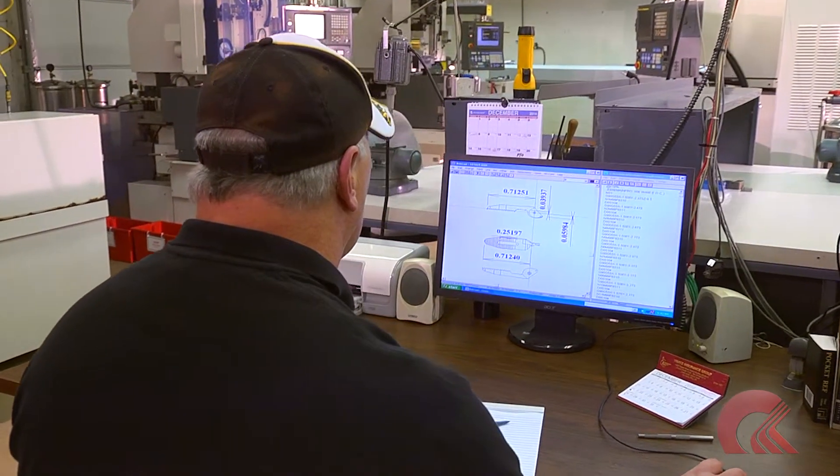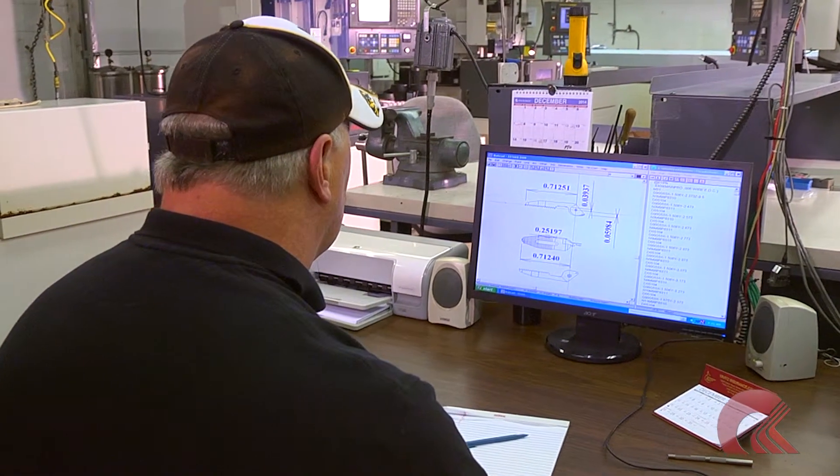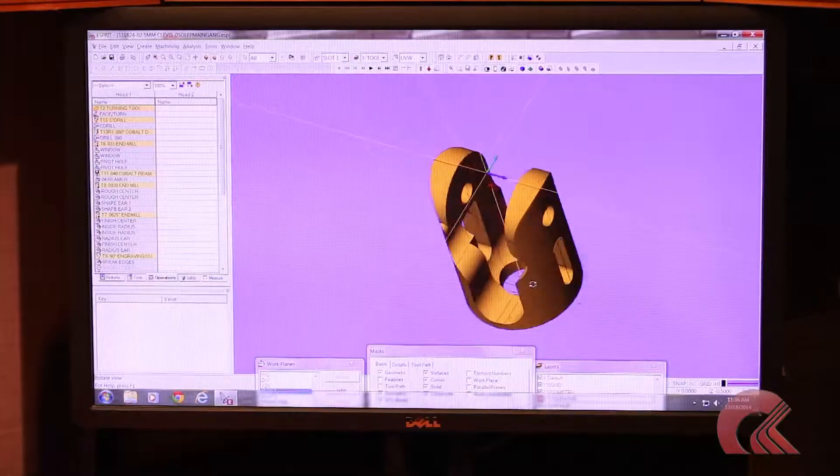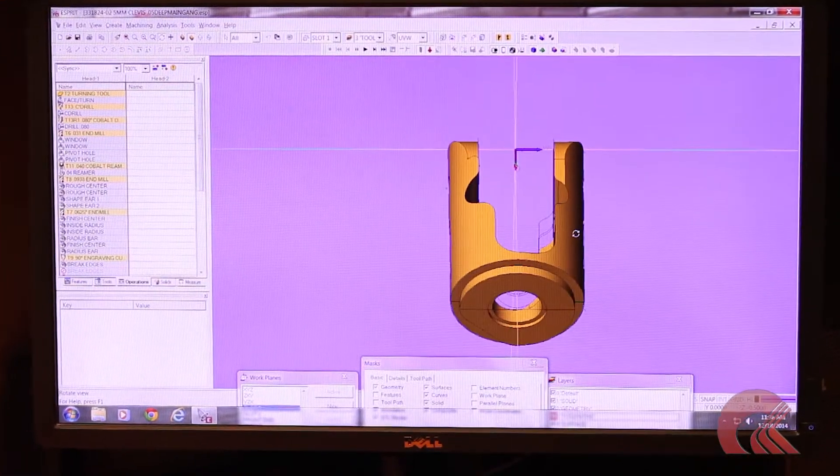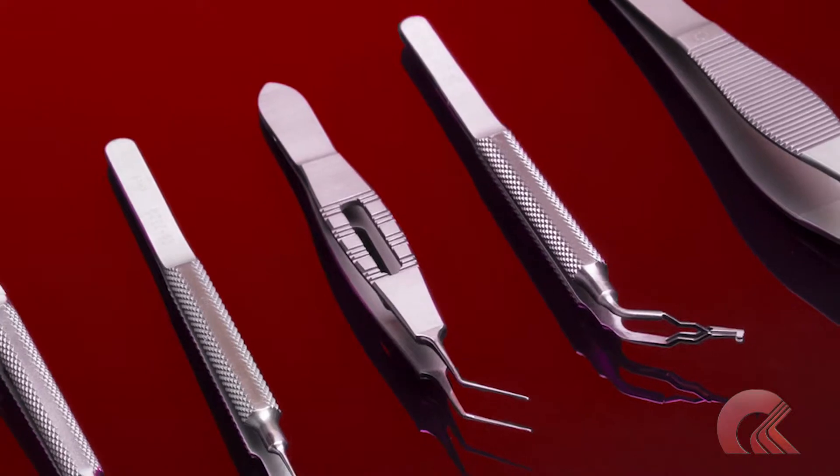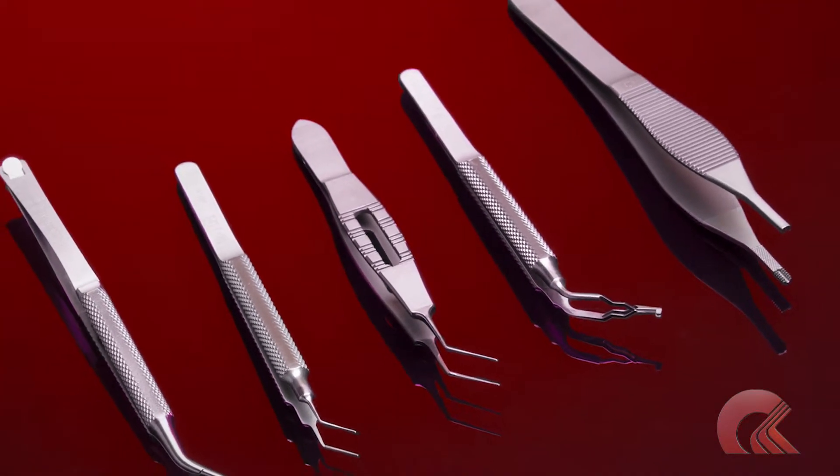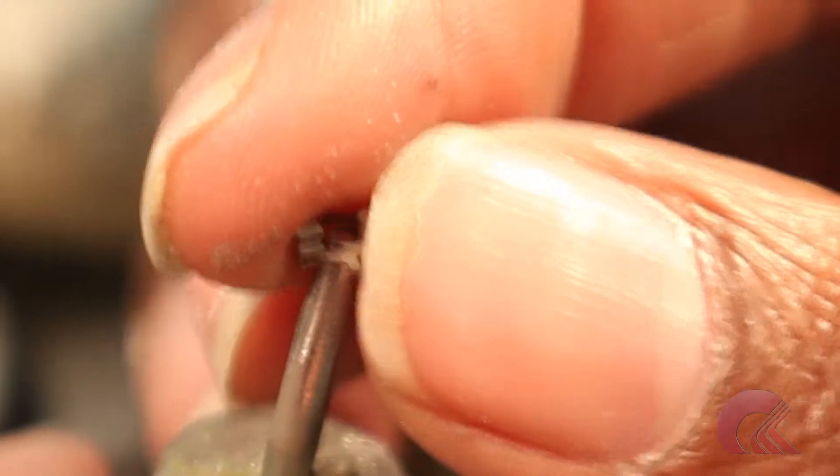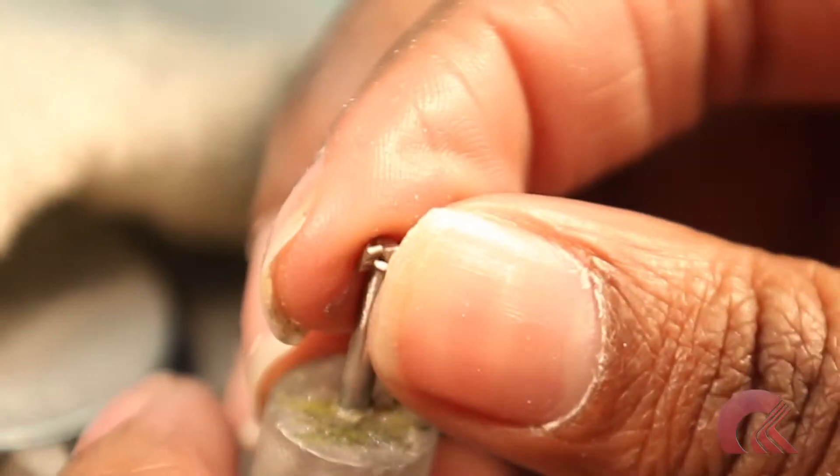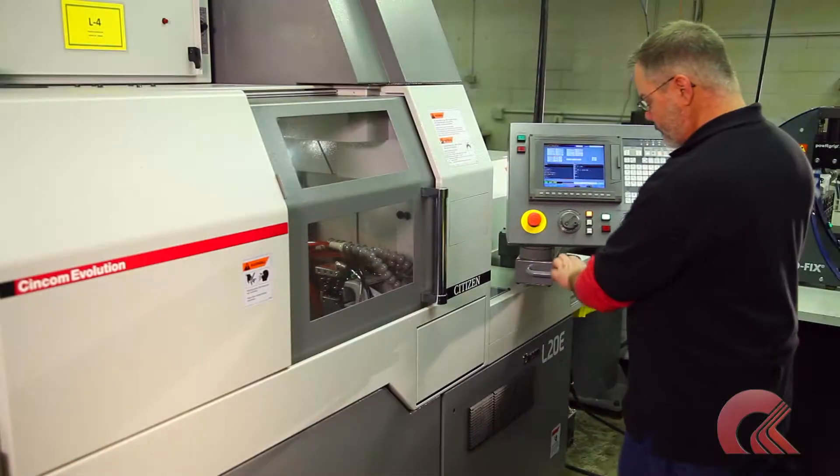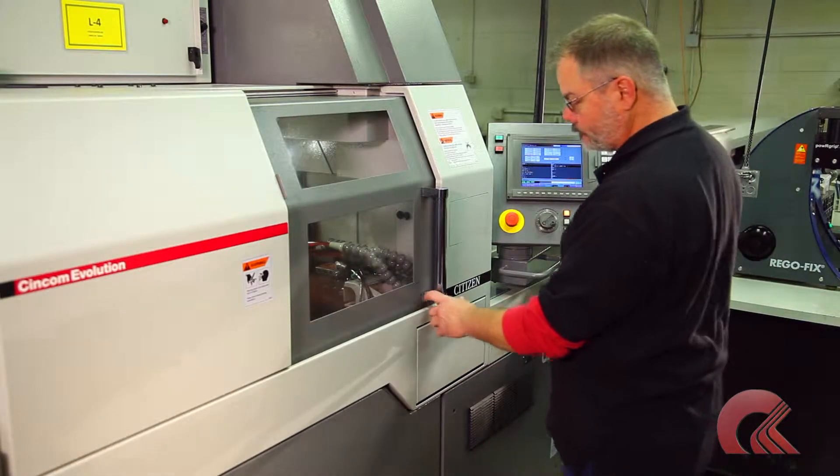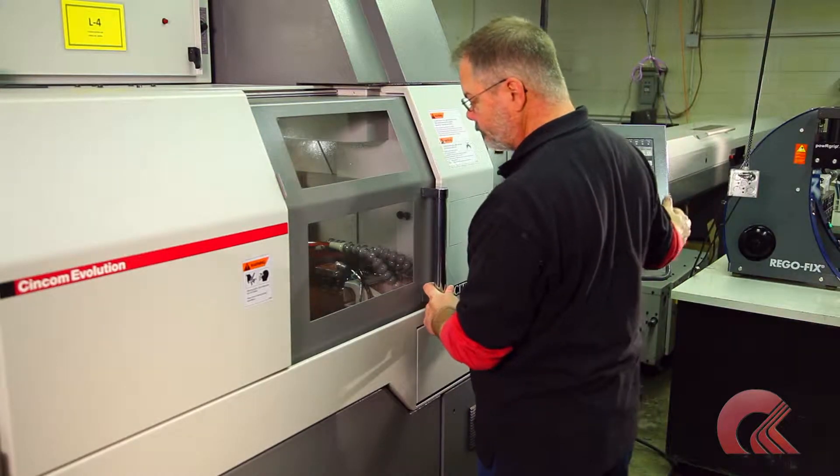Rhine Precision can fulfill customer needs by using customer design specifications, designing new products for specific applications, or by selecting from our large portfolio of products. Because Rhine creates its own processes for device manufacturing, we have the experience and resources to assure each customer's need is satisfied.